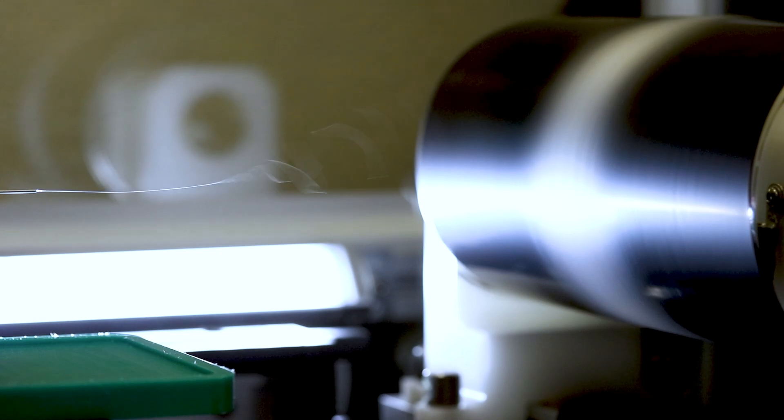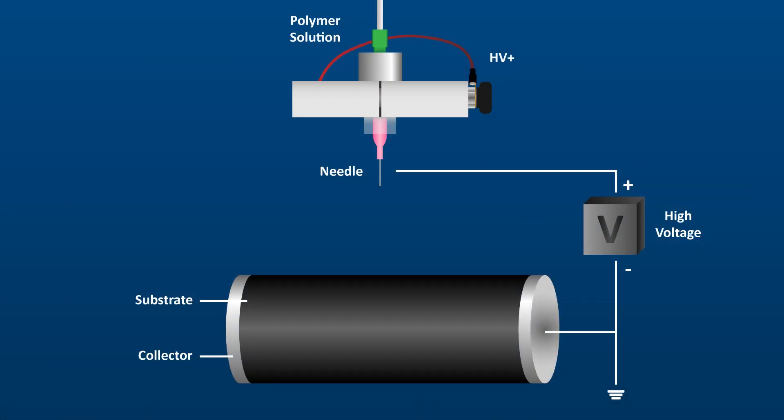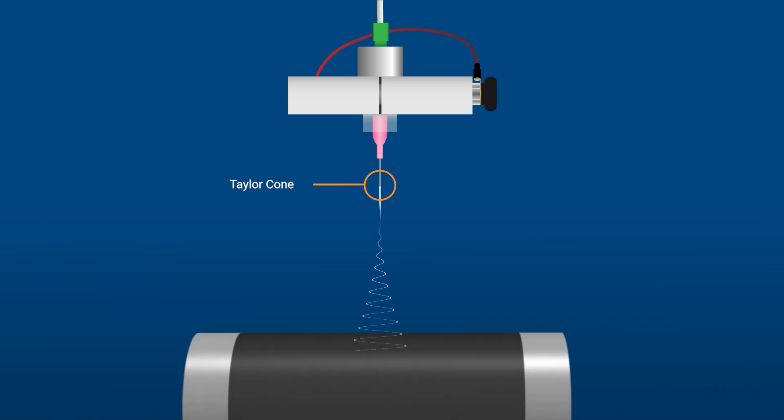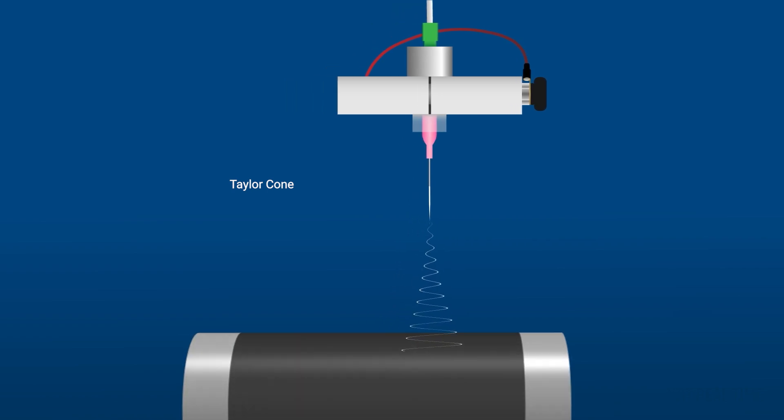Here's a simplified diagram of an electrospinning setup. We have a polymer solution in a syringe, a high voltage source, and a grounded collector. But there's something magical that happens during this process, and that's what we're going to talk about today: the Taylor cone.